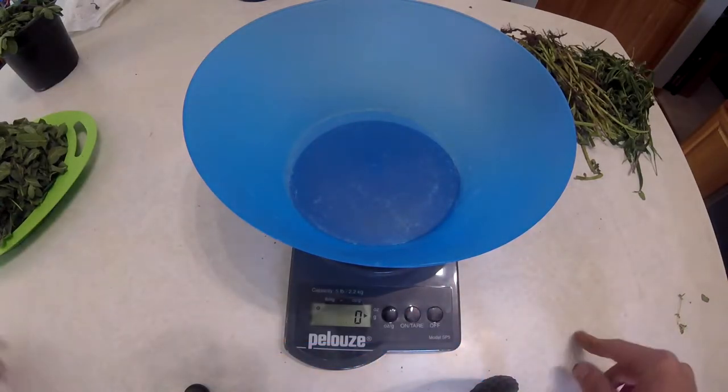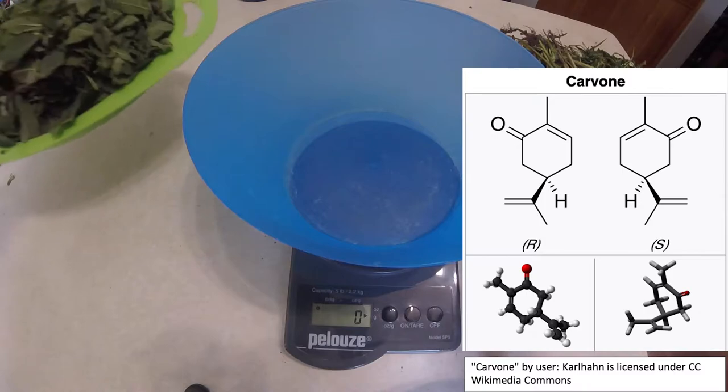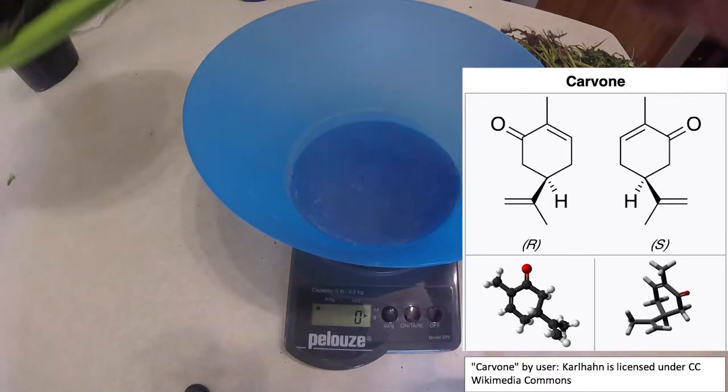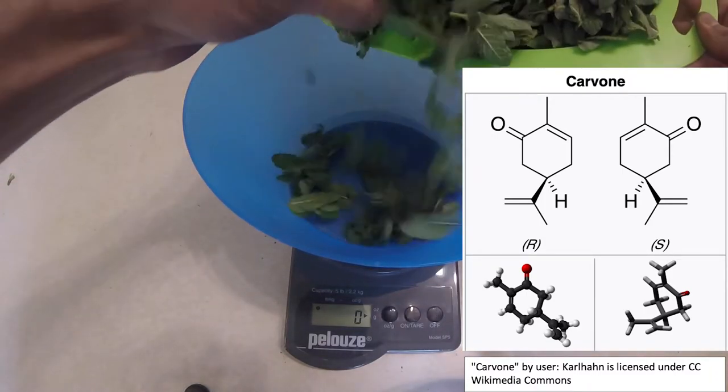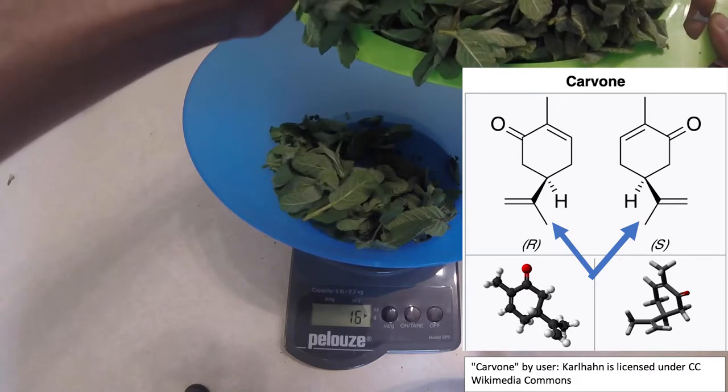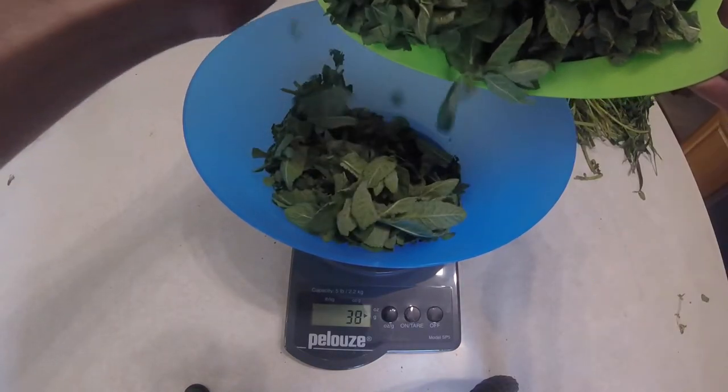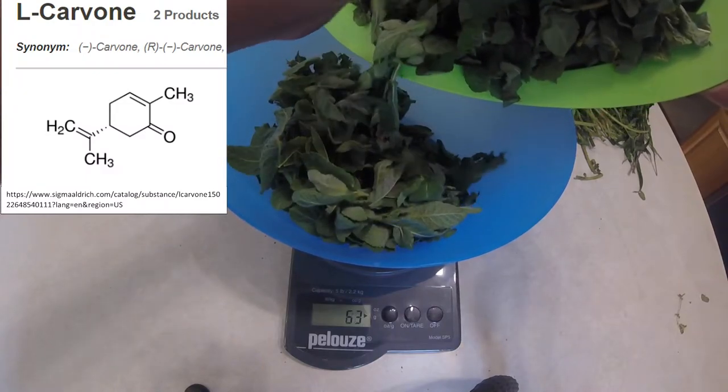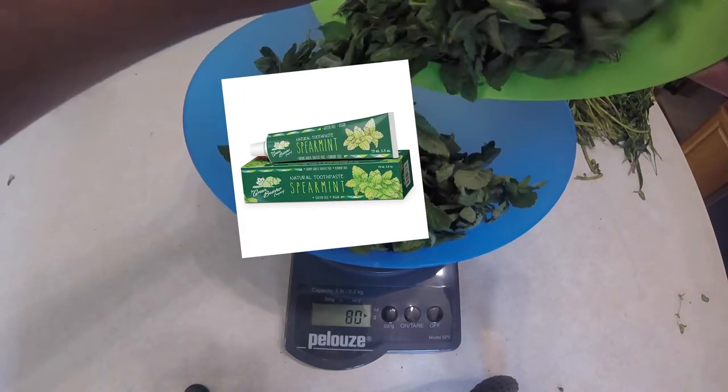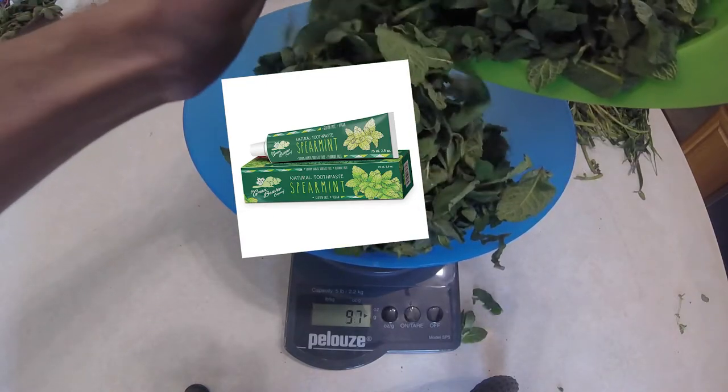One key component of spearmint oil is carvone. Carvone is a monoterpenoid also found in dill and caraway. Carvone has two enantiomers, mirror images of the same compound, and they each have different therapeutic properties. L-carvone is the type found in spearmint, which gives it its minty scent. This is why spearmint essential oil is a fairly common toothpaste ingredient.